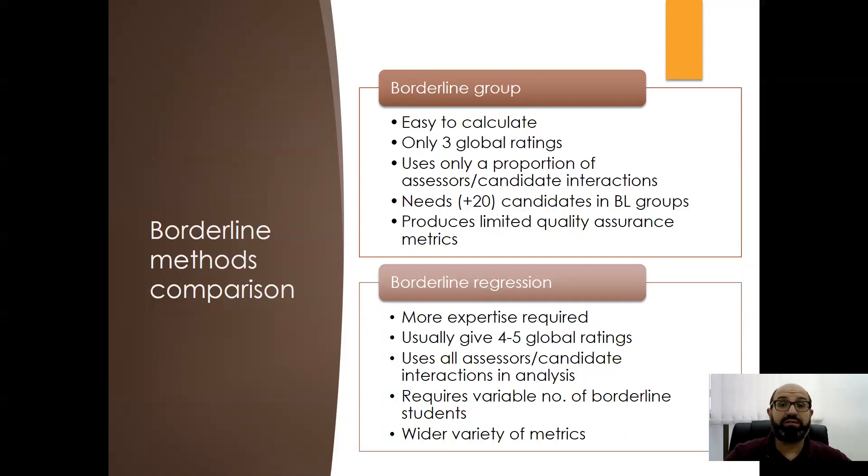For the borderline regression, you are taking the whole cohort together and you are calculating because you are plotting all the scores and you are considering a regression line that represents the scores of the whole cohort of students. So you are using all the interactions.